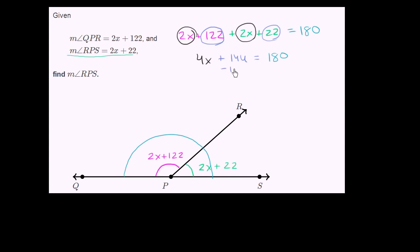We can subtract 144 from both sides. Subtract 144 from both sides. On the left-hand side, we're just going to be left with a 4x, this 4x right here. And on the right-hand side, we're going to have, let's see,